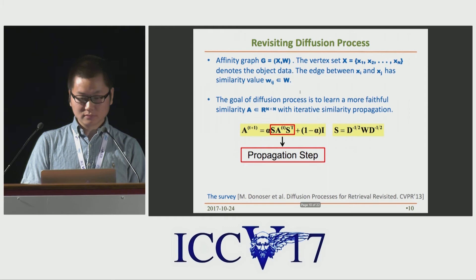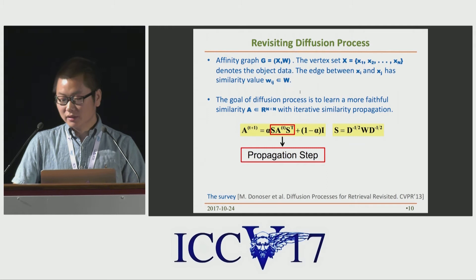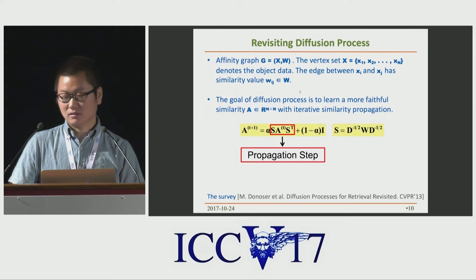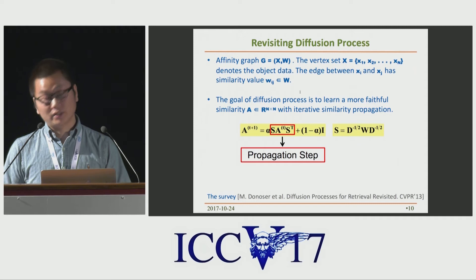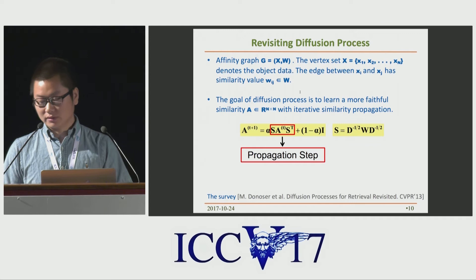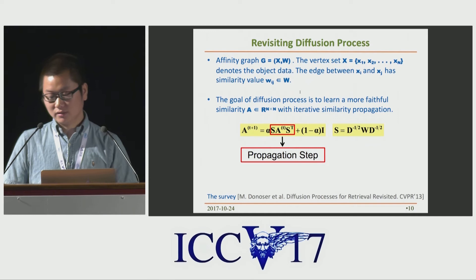We now introduce some basic concepts of diffusion process. Diffusion process works on an affinity graph G. The vertex set X denotes the object data, and each edge between two vertices has a similarity value W. The goal of diffusion process is to learn a new similarity A by iterative similarity propagation. A typical variant of diffusion process is formulated as shown in this equation, where S is the transition matrix, which can also be taken as a normalized similarity W.